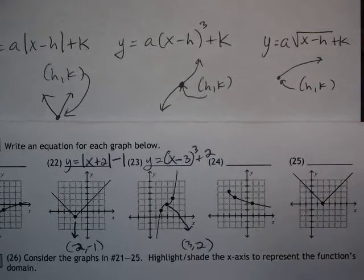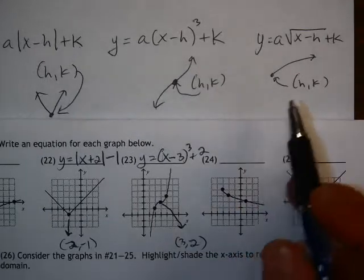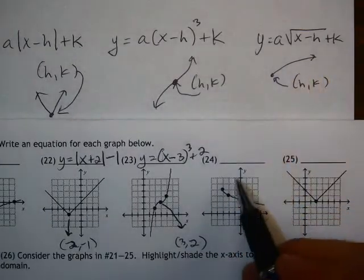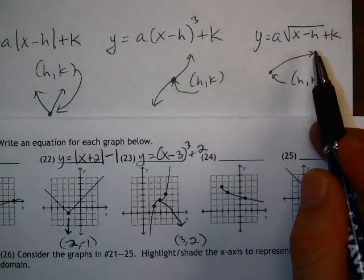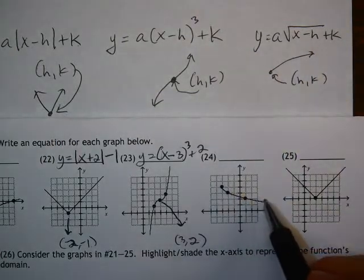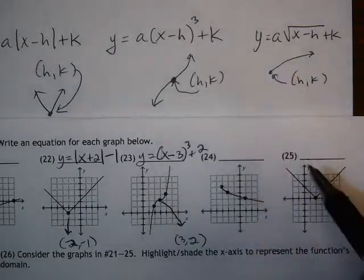Number 24, now I see this root graph, square root graph. But notice the only difference is normally it goes up to the right. Now it's going downwards. So now I have to deal with the a value.